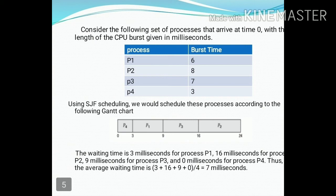P3 execution time is 7 ms, completing at 16 ms. P2 execution is next. Now we calculate the average waiting time: P4 is 0, P1 is 3 ms wait, P3 is 9 ms wait, and P2 is 16 ms wait. Adding all four and dividing by 4, the average waiting time is 7 ms.